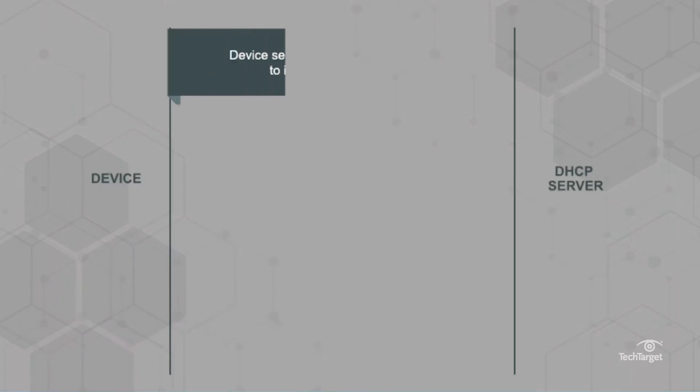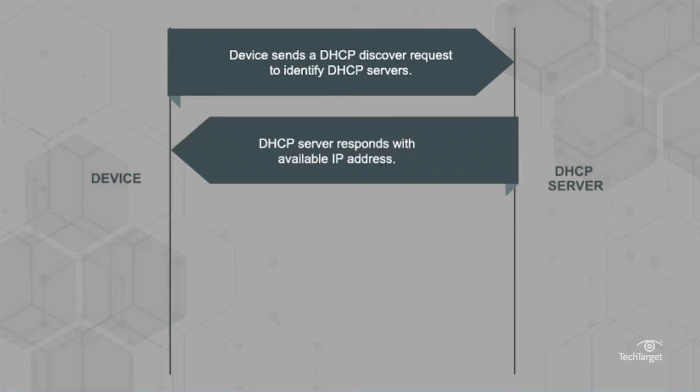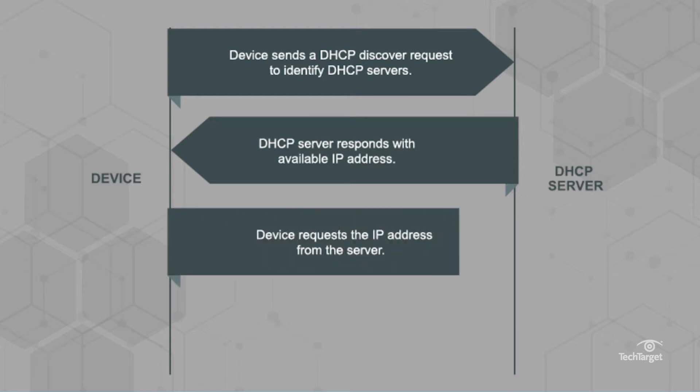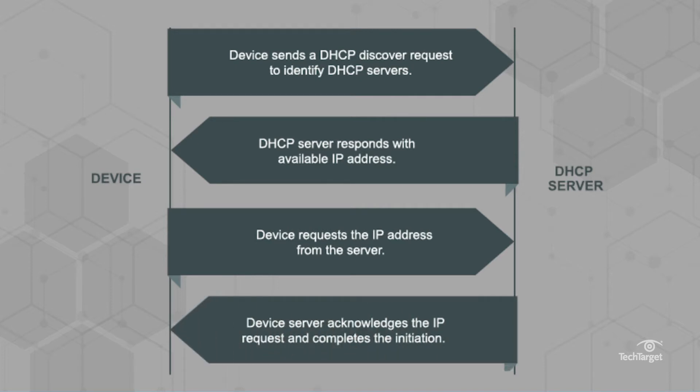First, the device sends a DHCP discover request to identify DHCP servers. Second, the DHCP server responds with available IP addresses. Third, the device requests an IP address from the server. And fourth, the DHCP server acknowledges the IP request and completes the initiation cycle.